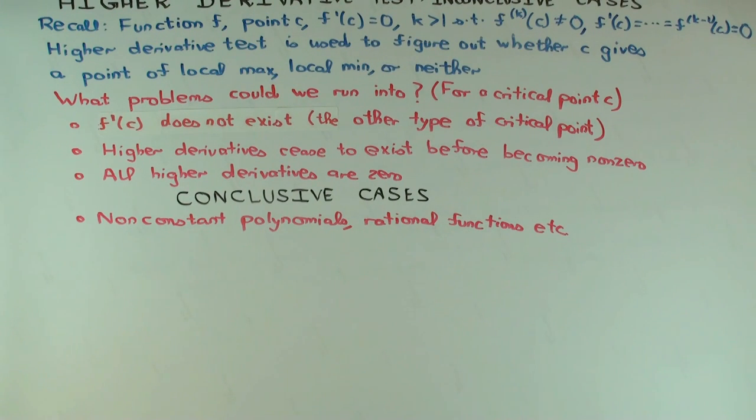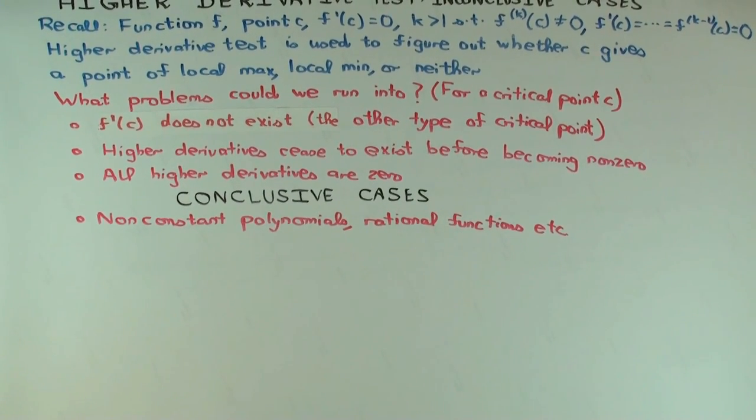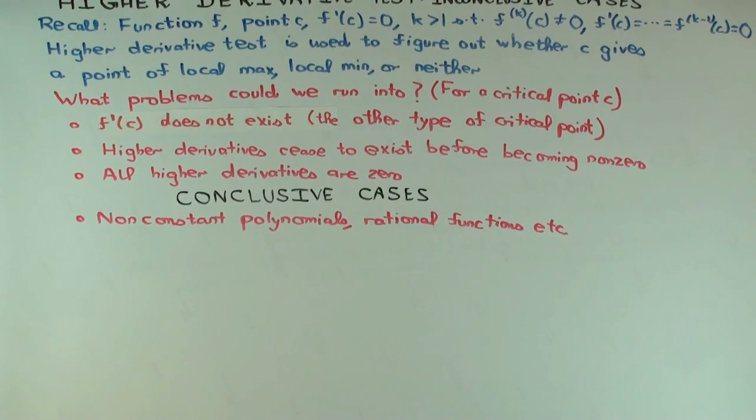For rational functions, it's a little trickier to see, so I'll skip that. Because the way you differentiate a rational function is different, but that's sort of the idea for polynomials.